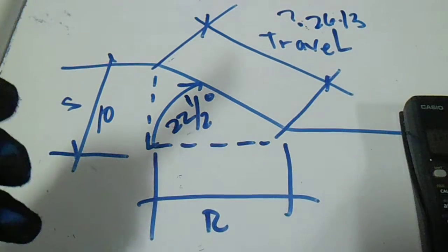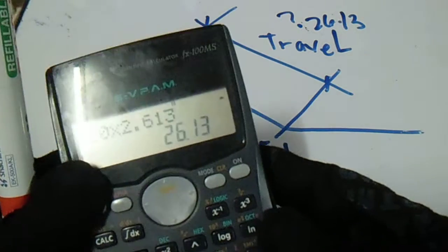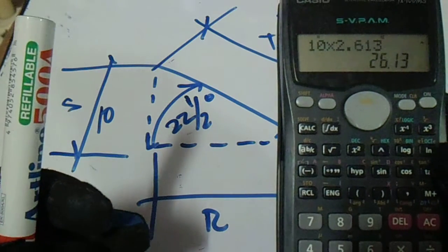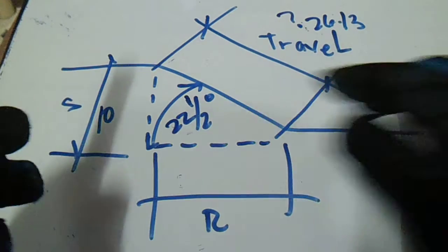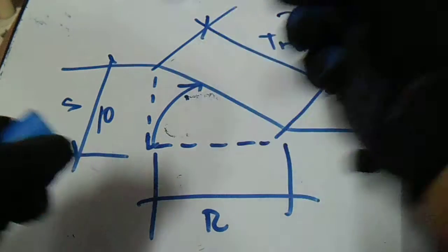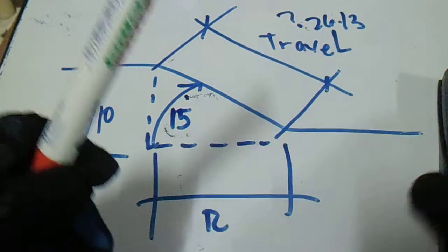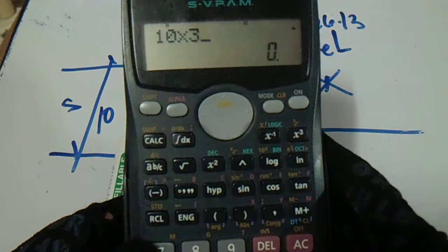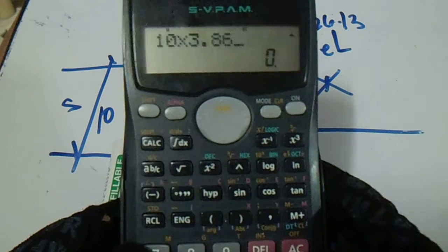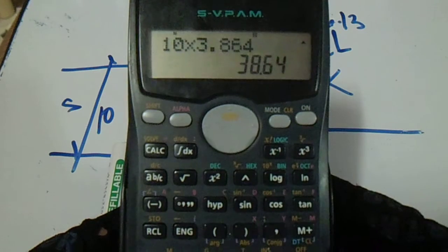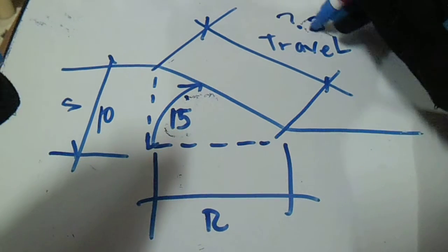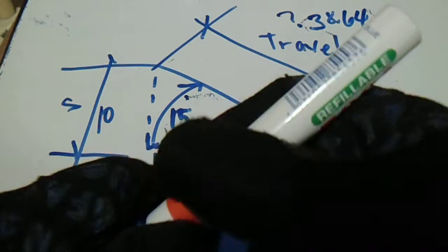Where do we get 2.613? This is the cosecant of 22 and one half degrees. Now let's say this is 15 degrees — same procedure — multiply it to 3.864. The answer is 38.64 for the 15 degrees.